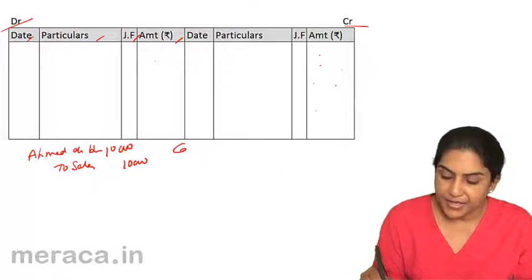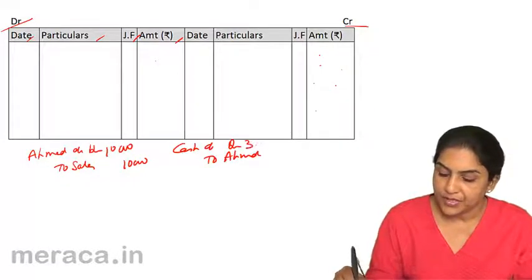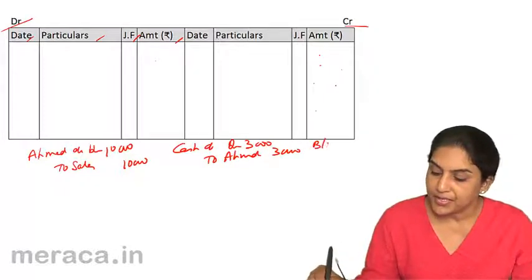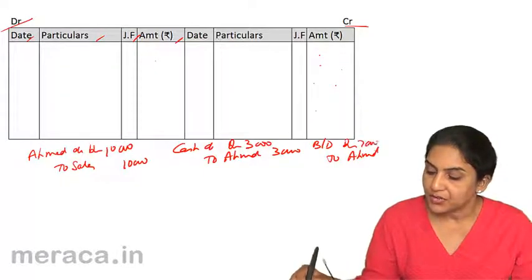Then he paid us money. So we said cash account debit to Ahmad, he paid 3,000. And we passed one more entry saying bad debts account debit since he was not going to pay to Ahmad. We said 7,000.